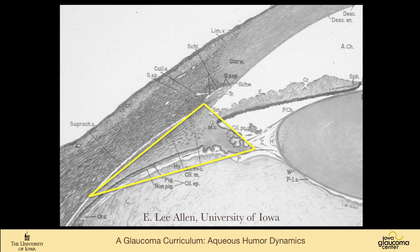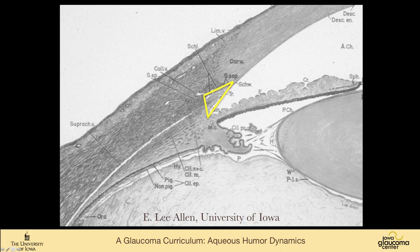We're going to be talking about the ciliary body and the outflow system in the iridocorneal angle. The angle, of course, is the angle made up by the clear cornea and the iris. Sitting within the angle is the trabecular meshwork in the ciliary body face, which is where the outflow occurs.